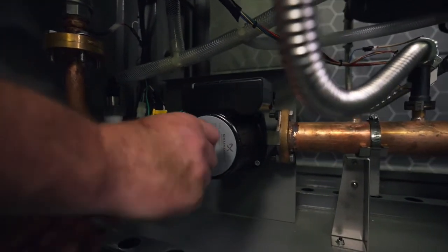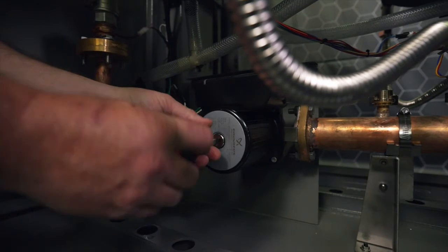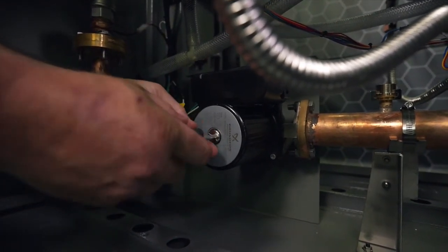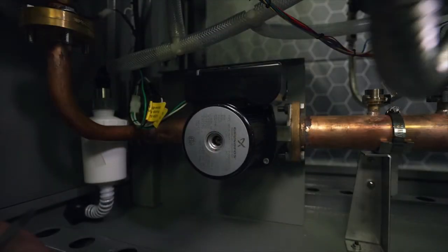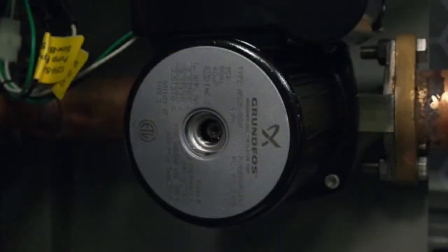You will then want to remove the 1 inch flathead screw on the side of the pump. This will bleed the pump of air in the system and will allow you to see the shaft on the inside. You should be able to see the shaft turning.